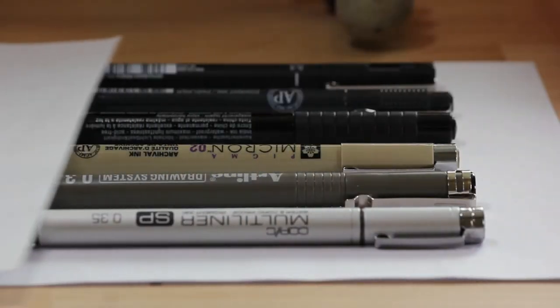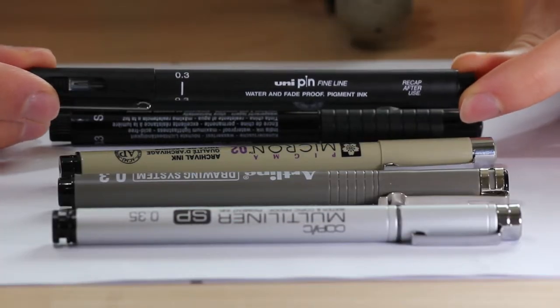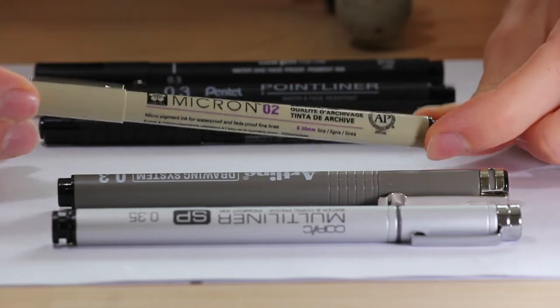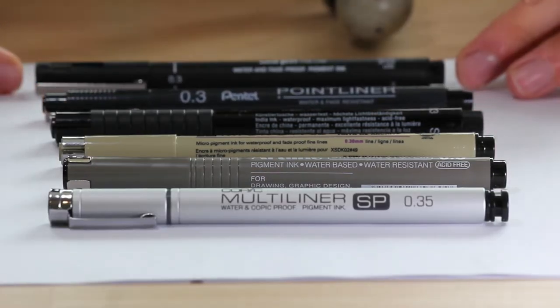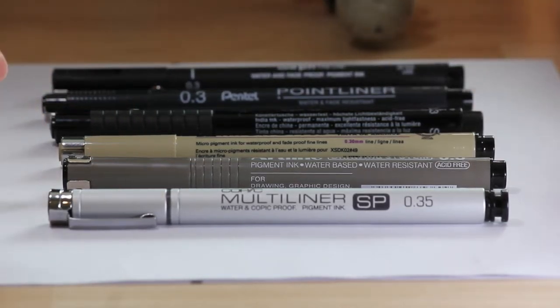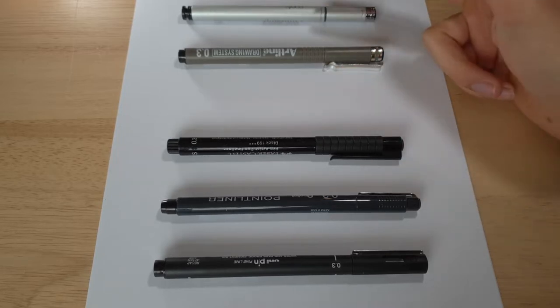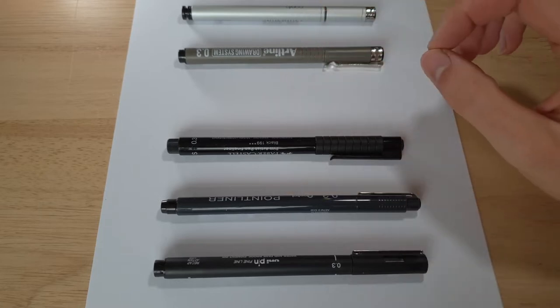So I'm going to be reviewing all of these wonderful looking fineliners. I'm comparing the UniPin FineLine, the Pentel Point Liner, the Faber-Castell FineLiner Pen, the Pigma Micron, the Artline Drawing System Pen, and the Copic Multiliner SP. All of these fineliners are 0.3mm in size, except for the Copic Multiliner which is 0.35mm, because I can barely see the difference. Before I really start digging into these pens, I'd just like to say they're all very good quality fineliners, and you probably couldn't go wrong buying any of them. Actually I'll remove this one. These are all very good fineliners, and you probably couldn't go wrong buying any of them, because they're all made by companies that can make a good quality product.